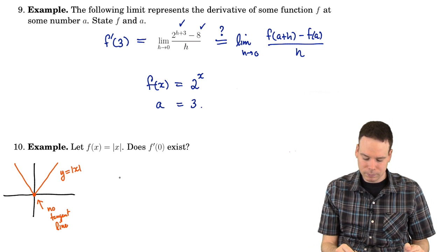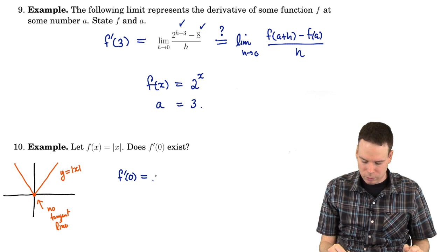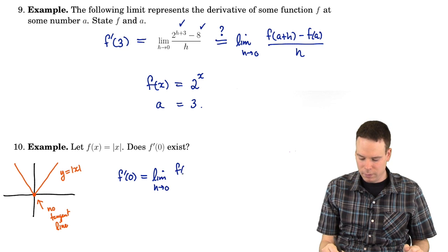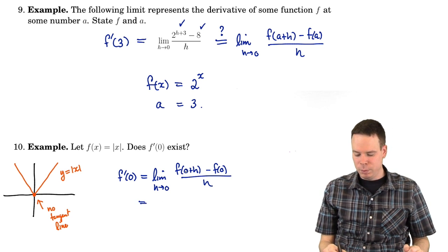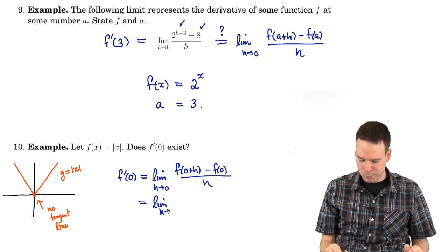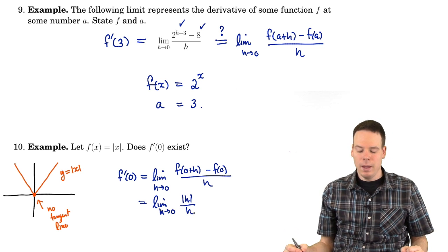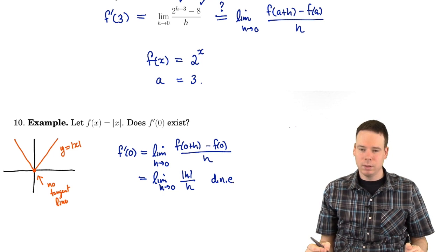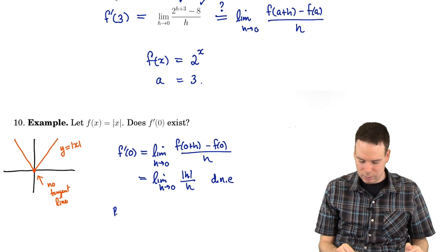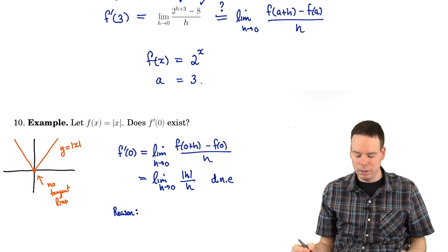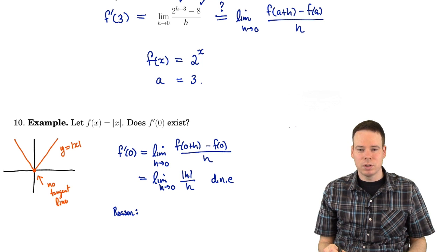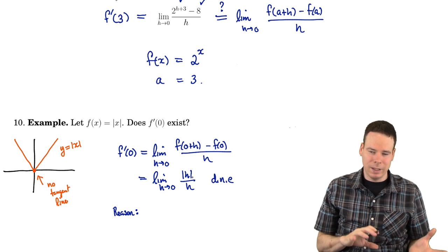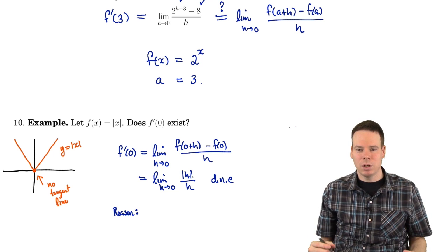f prime of 0 equals the limit as h goes to 0 of f(0 + h) minus f(0), all over h. Since f(0 + h) = f(h) = |h|, and f(0) = 0, this becomes the limit of |h| over h. This is a limit we've seen before — it does not exist. As h gets close to 0, the absolute value function behaves differently for positive and negative h, so we look at one-sided limits. From the right, |h| = h, so that ratio is 1 and the limit is 1. From the left, |h| = −h, so that limit is −1.